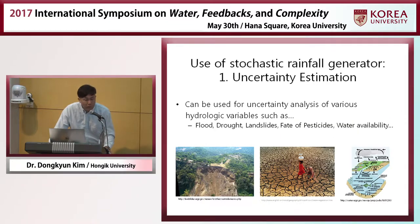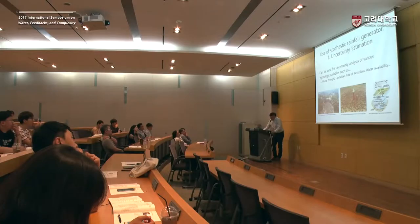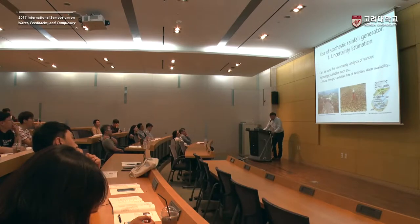So where is this stochastic rainfall generator used? Firstly, it is widely used for uncertainty estimation. It can be used for the uncertainty analysis of various hydrologic variables such as rainfall-related variables — for example, flood, drought, landslides, or water availability.